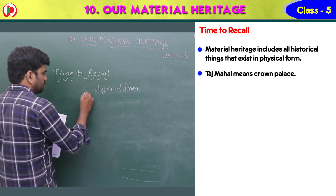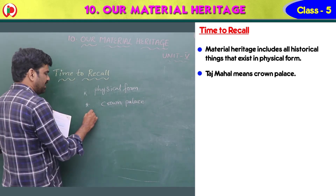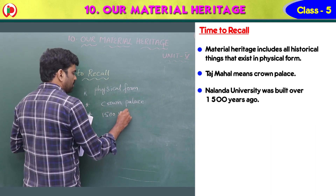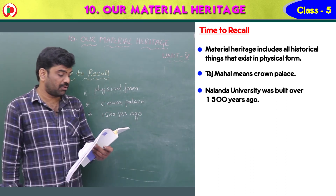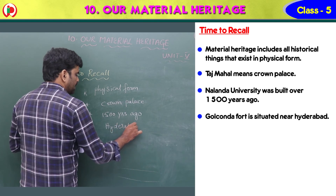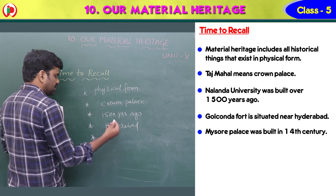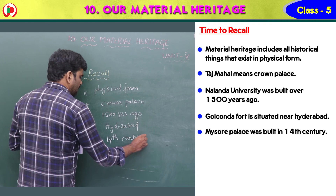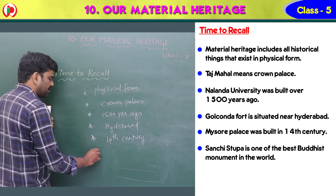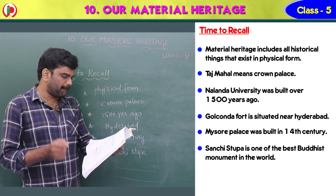Taj Mahal means Crown Palace — it was built by Shah Jahan and is located in Agra. Nalanda University was built over 1500 years ago and is in Bihar. Golkonda Fort is situated in Hyderabad. Mysore Palace was built in the 14th century in Karnataka. Sanchi Stupa is one of the best Buddhist monuments in the world.